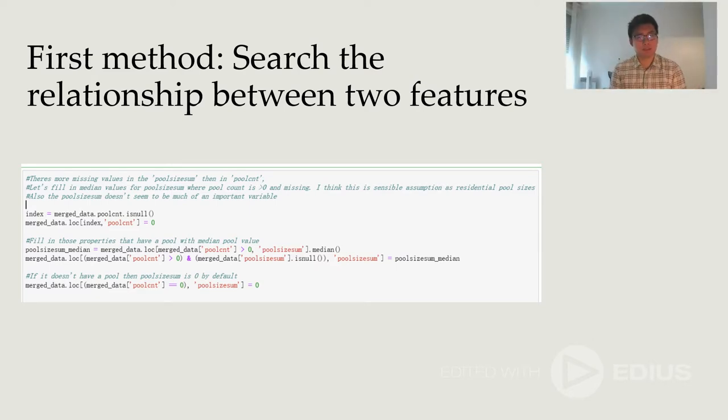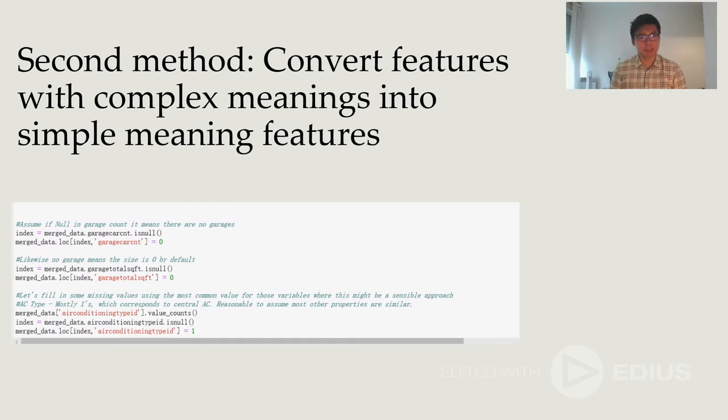Now, I will present the rest part of data processing. There are 14 features left. We cannot use geo property to fill the missing value. So, we find three principal methods. The first method is to search the relationship between two features. For example, there are two features: the count of swimming pool and the sum of pool size. We set the count to zero if there is no value. And then fill in missing value of the feature, the sum that have a pool, with median pool value. If it doesn't have a pool, pool size sum is zero by default.